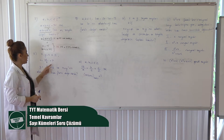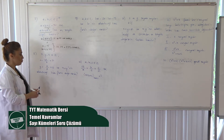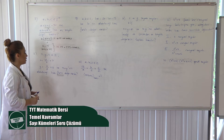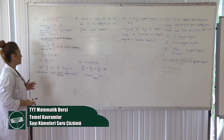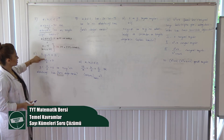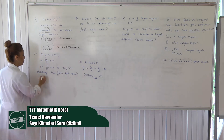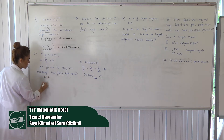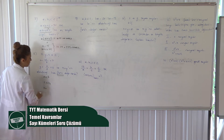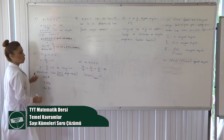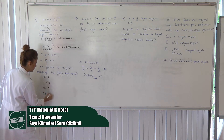8. sorumuzda X sayısı 42 bölü Z artı 7, Y sayısı Z bölü 7 artı 6 ise X artı Y'nin alabileceği kaç farklı değer vardır? Burada 'farklı' kelimesine dikkat edin arkadaşlar, çünkü birbiriyle aynı olan değerler de bulabilirsiniz; onları direkt elemeniz gerekir. Z sayısı hem 42'yi bölecek hem de 7'nin katı olacak. 7'nin katı olan ve 42'yi bölen sayılara bakıyorum: 7, 14, 21 ve 42 alabilirim. 7'nin 4 katı ve 5 katı 42'yi bölmez, onları almıyorum.